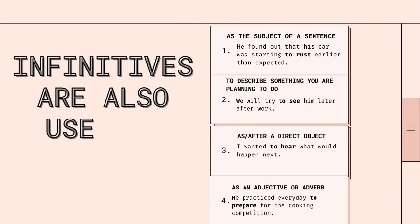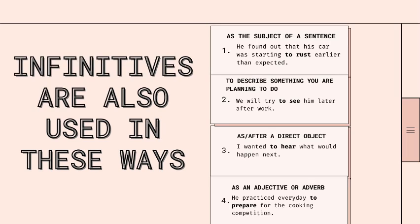Infinitives are also used in these ways. One, as the subject of a sentence — for example, 'He found out that his car was starting to rust earlier than expected.' To describe something that you were planning to do — for example, 'We will try to see him later after work.' As or after a direct object — 'I wanted to hear what would happen next.' As an adjective or an adverb — 'He practiced every day to prepare for the cooking competition.'